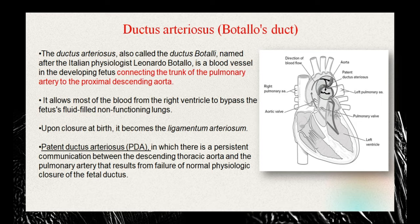The function of this duct in the fetus is to allow most of the blood from the right ventricle to bypass the fluid-filled, non-functioning fetal lungs. In normal circulation blood goes from the right ventricle to the lungs via the pulmonary artery, then back to the left atrium. But in the fetus, the ductus arteriosus connects the pulmonary artery directly to the descending aorta, bypassing the lungs. After birth this duct closes and becomes the ligamentum arteriosum.